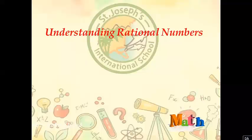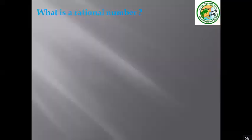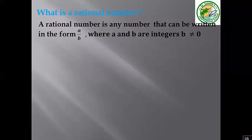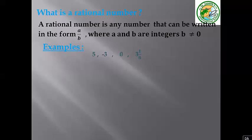The second lesson is understanding rational numbers. A rational number is any number that can be written in the form a over b as a fraction, where a and b are integers and b is not equal to zero. For example: 5 becomes 5 over 1; negative 3 becomes negative 3 over 1; 0 becomes 0 over 1; and 3 and 1 over 8 is converted to the improper fraction 25 over 8.